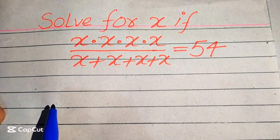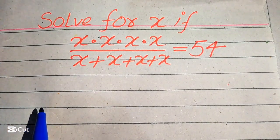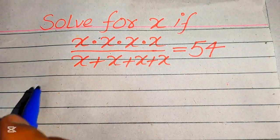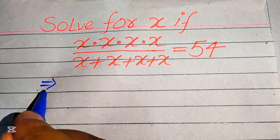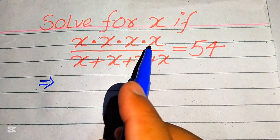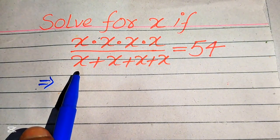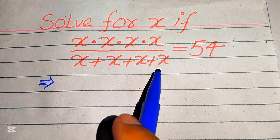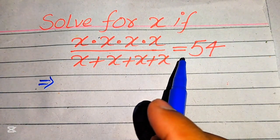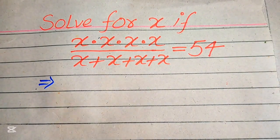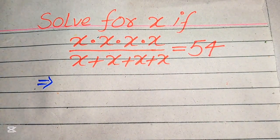Hello everyone, welcome to solve this nice math Olympiad algebra problem. We have x multiplied by x multiplied by x multiplied by x, divided by x plus x plus x plus x, equals 54, and we solve this problem for the values of x.